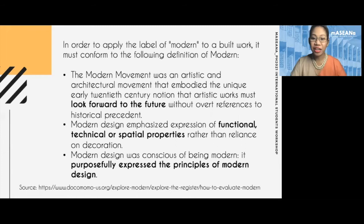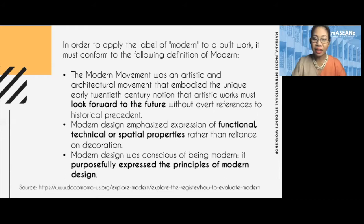According to the International Committee for Documentation and Conservation of Building Sites and Neighborhoods of the Modern Movement, or DOCOMOMOMO, modern architecture has the following characteristics. Firstly, its design must be modern — meaning it looks toward the future, unencumbered by any historical precedent. Secondly, rather than emphasizing craftsmanship or ornamentation, what is emphasized is the function and use, and technical and spatial properties. Lastly, modern architecture is conscious of what it is — it knows it is modern, and it is unapologetically so.